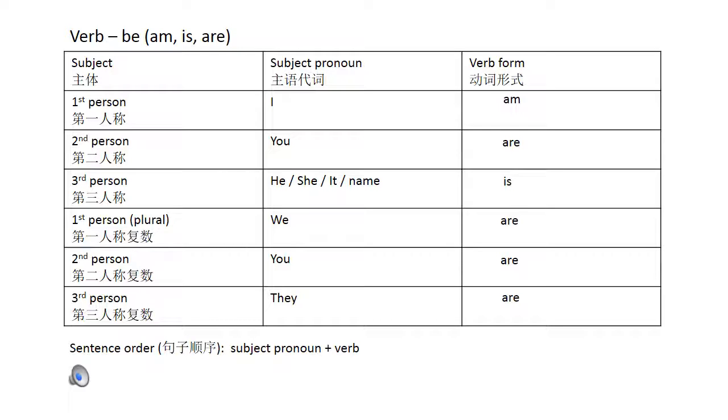The verb be is the most common word in English. It is everywhere, so you need to know how to use it correctly. There are three forms of be: am, are, and is.